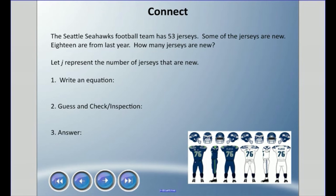Let's try this one. The Seattle Seahawks football team has 53 jerseys. Some of the jerseys are new, 18 are from last year. How many jerseys are new? We're going to use j to represent the number of jerseys that are new. I'm going to get you to write an equation. How can you write an equation to represent this problem? Once you've got your equation, I'd like you to guess and check or use the inspection method to find the answer and then you can answer. Pause it right there and come back when you got an answer.